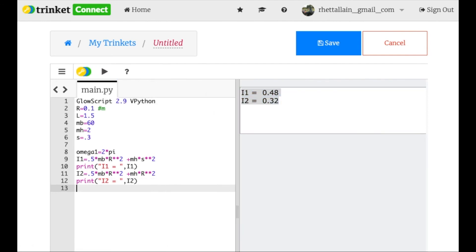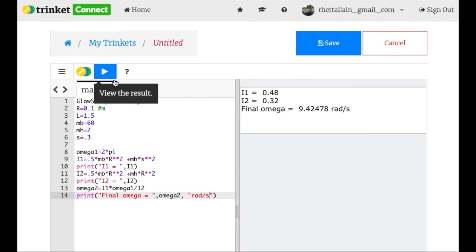Okay and then we can print out omega 2. It's going to be equal to I1 times omega 1 divided by I2. Print final omega equals—I'll put the units here—omega 2 radian per second. So they were going at 2π now they're going at, which is you know 6-ish, now they're going at 9.4 radians per second. So they did increase in speed which is what we'd expect. We've seen this before you know that that's how it should work.